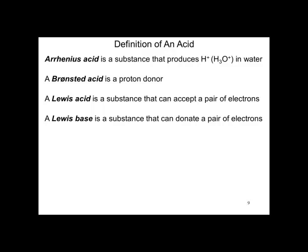So far we've had two definitions of acids. The Arrhenius definition: a substance that produces H+ in water. A Bronsted acid is a proton donor. Now we want to look at a Lewis acid, which is a substance that can accept a pair of electrons, and a Lewis base, which is a substance that can donate a pair of electrons.